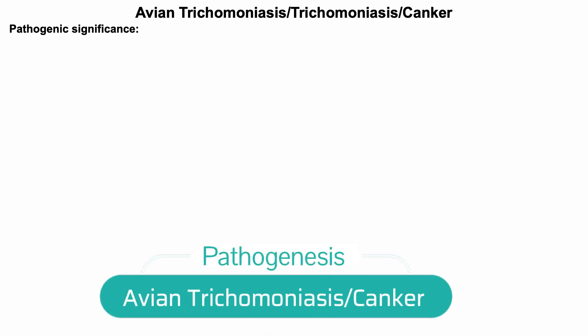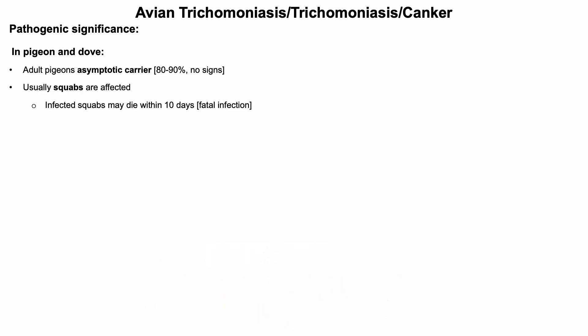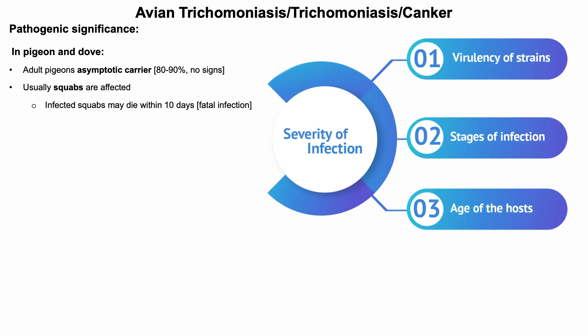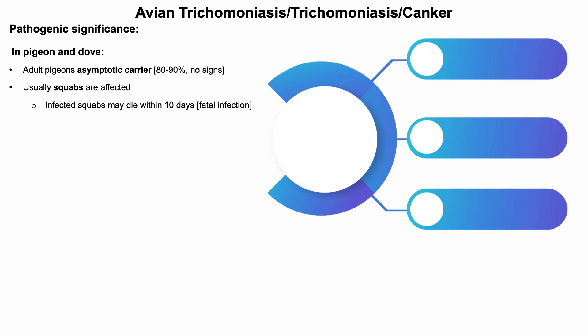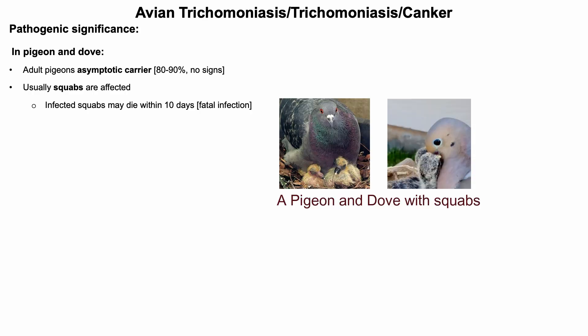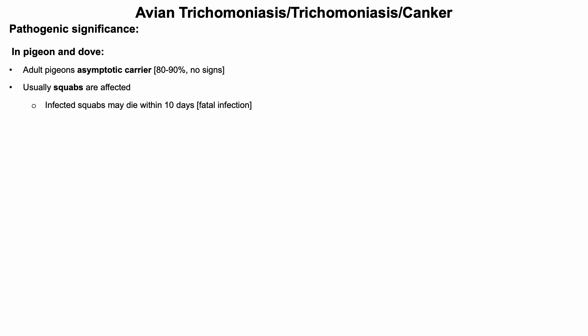Pathogenic significance of avian trichomoniosis or canker: the severity and development of lesions varies with the virulence of the strains, the stage of infection, and the age of the host. It is reported that 80 to 90 percent of adult pigeons are infected but do not show any clinical signs. It is assumed that most of these birds become immune due to exposure to avirulent strains. Usually young pigeons suffer most and get the infection from adults during feeding through pigeon milk. The resulting infection may range from asymptomatic or mild disease to a rapidly fatal form.